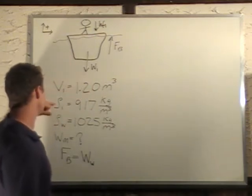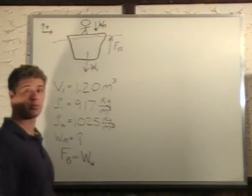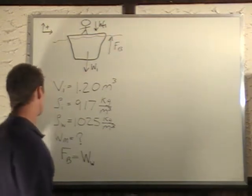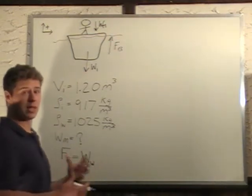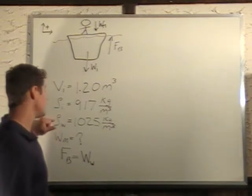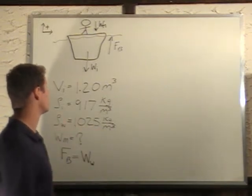The rho of the ice is 917 kilograms per cubic meter. Ice expands when it freezes, so it's less dense. The rho of seawater is 1025 kilograms per cubic meter.